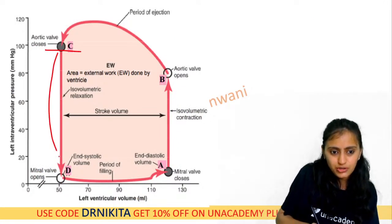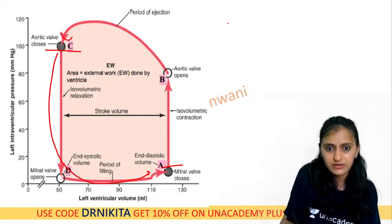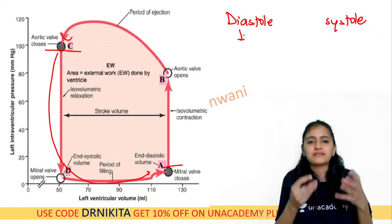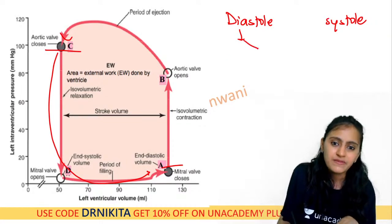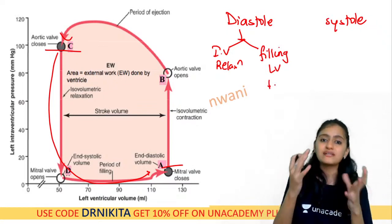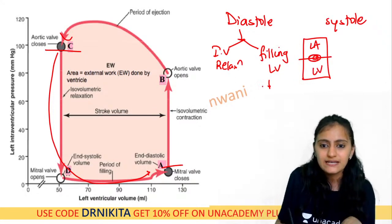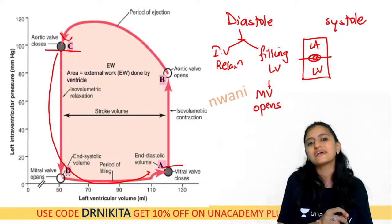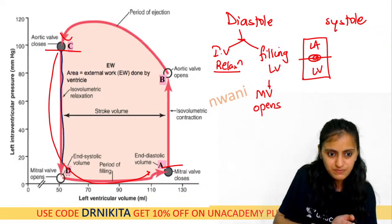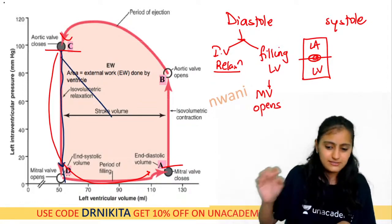From point C to point A indicates diastole, and from point A to point C indicates systole. In diastole the ventricle gets filled — the initial part is isovolumetric relaxation, then comes filling of the left ventricle when the mitral valve opens. The mitral valve sits between the left atrium and the left ventricle.